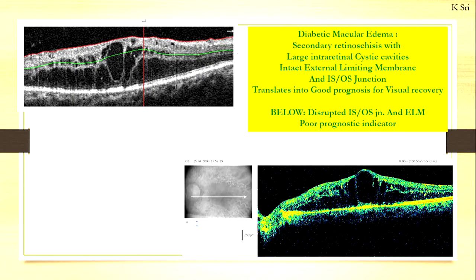Can it also prognosticate? Now, if you look carefully, you see these are two pictures — both seem to show a large amount of edema, both diabetics with large cystic cavities. But if you see here, the ISOS junction is missing — this patient will not respond well to treatment. Now here, the ELM and the ISOS junction is intact, and this patient did very well after treatment. So this is how you can use OCT for prognostication, not just diagnosis.